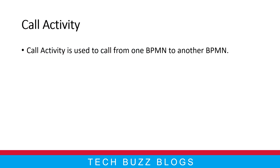Welcome back. In this video we are going to cover what is Call Activity. In Camunda we see a lot of tasks — user tasks, service tasks — and similar to those, Call Activity is also one of the tasks. What it basically does is take care of calling from one BPM into another BPM. So your control is going in one BPM file and inside one process, and you want to call another BPM file and another process — with the help of Call Activity you can do that.